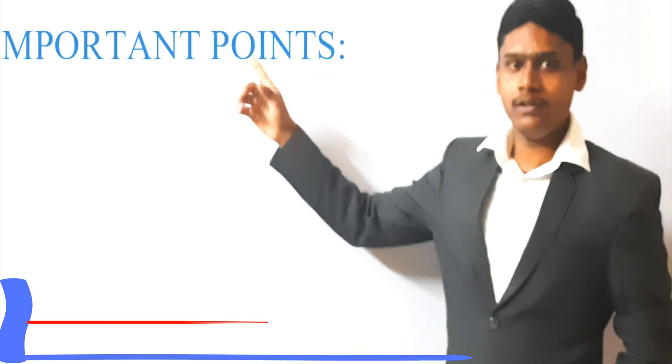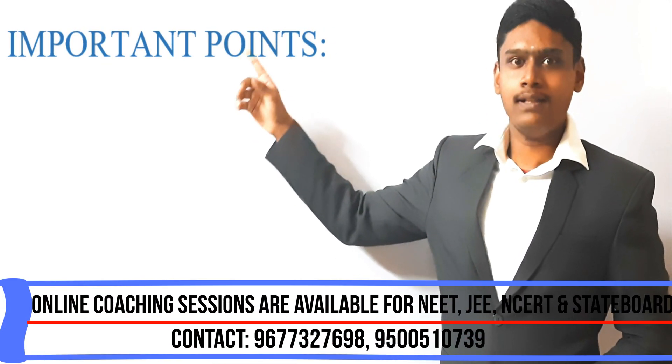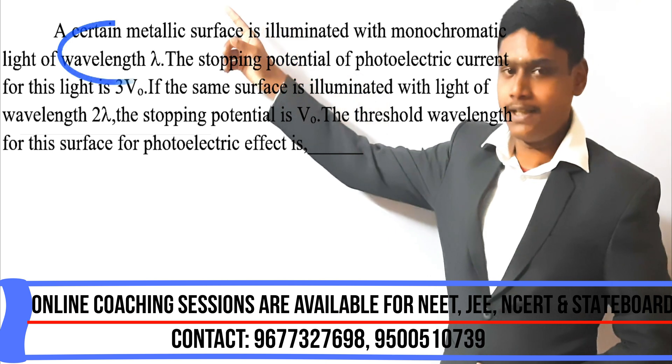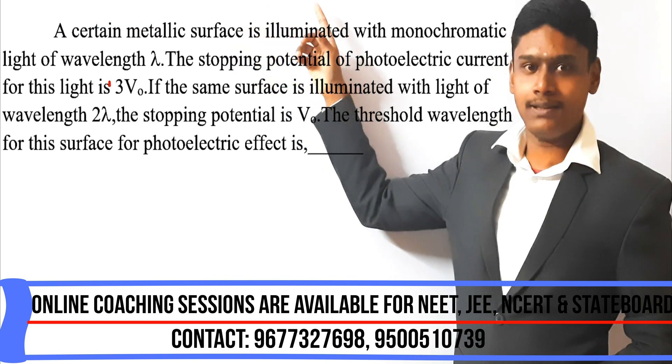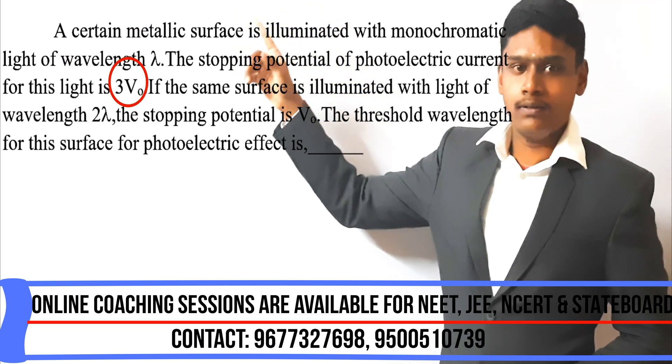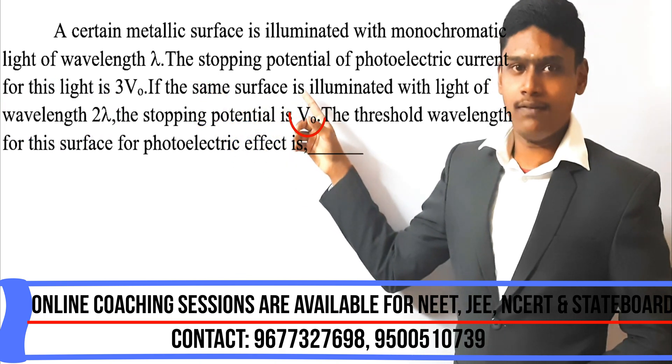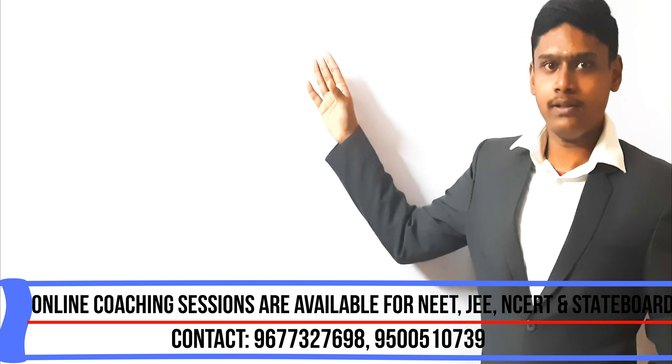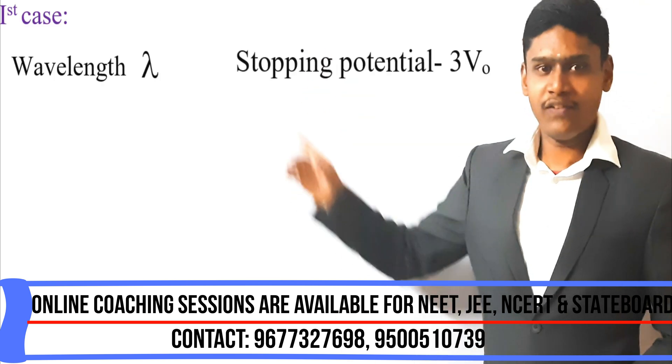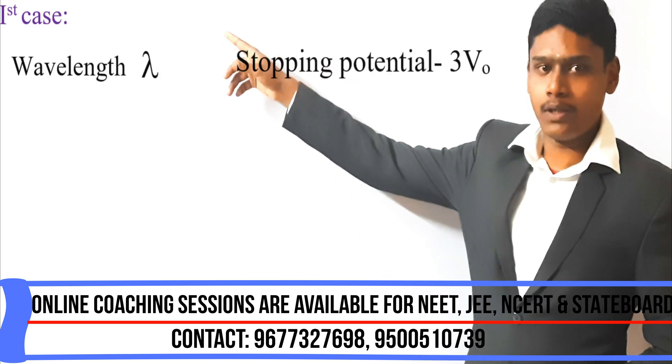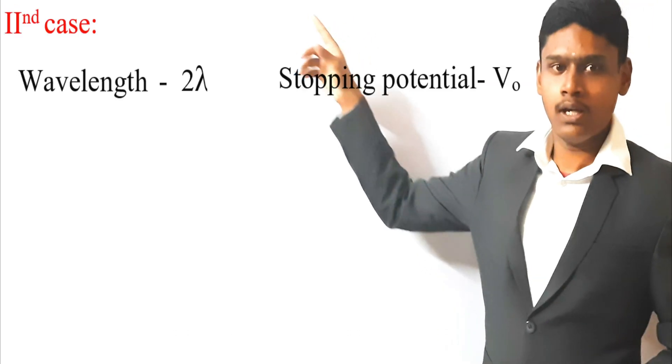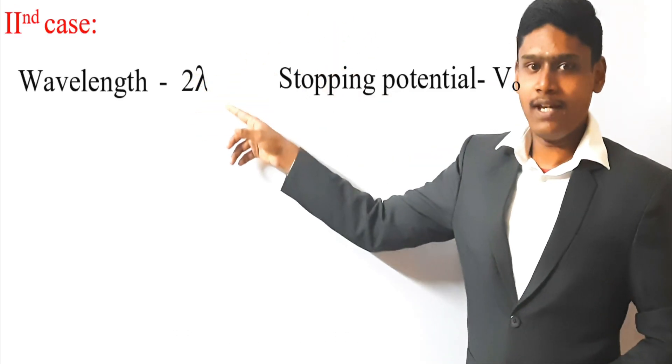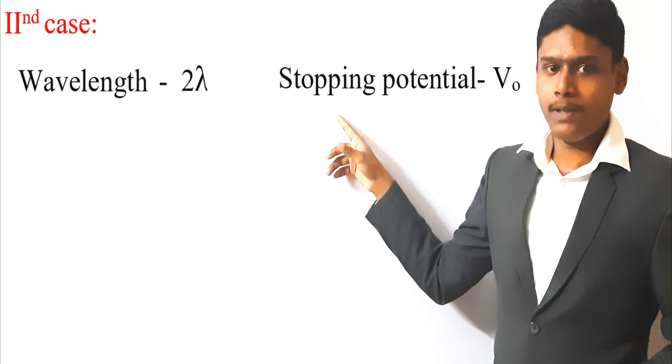The important points which have to be noted and encircled are wavelength lambda and stopping potential 3V0 and wavelength 2 lambda and stopping potential V0. Let us divide these important points into two cases. In the first case, we will have wavelength lambda and stopping potential 3V0. In the second case, wavelength 2 lambda and stopping potential V0.